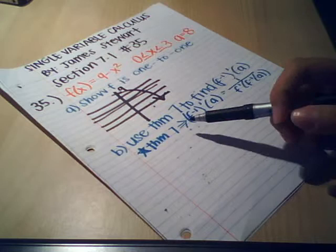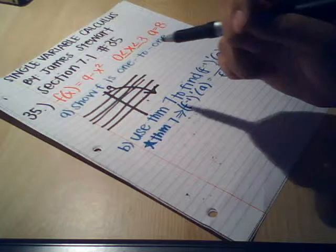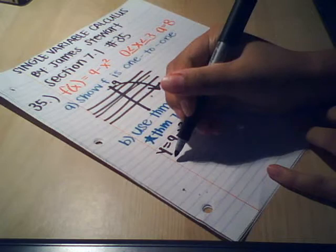Part B says use theorem 7 to find the derivative of the inverse A. So we are going to start off by taking the inverse of the function 9 minus x squared. To take the inverse of the function, you switch x and y, and you solve for y. Let's do that right now.